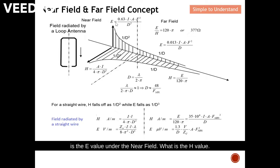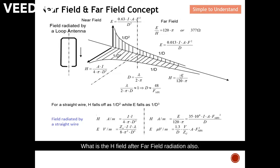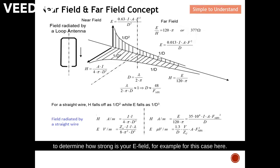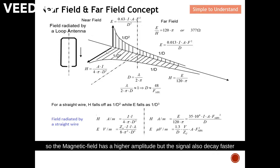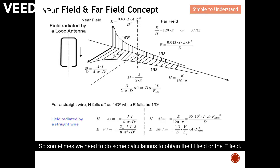There are formulas here that allow us to calculate the E value and H value in the near field. You can also calculate the E field and H field after far field radiation. These parameters let you determine how strong your E or H field is. For a loop antenna dominated by magnetic field, the magnetic field has higher amplitude but decays faster compared to the electric field. Calculations can be done to obtain the H field or E field, and after the far field the formulas change completely.